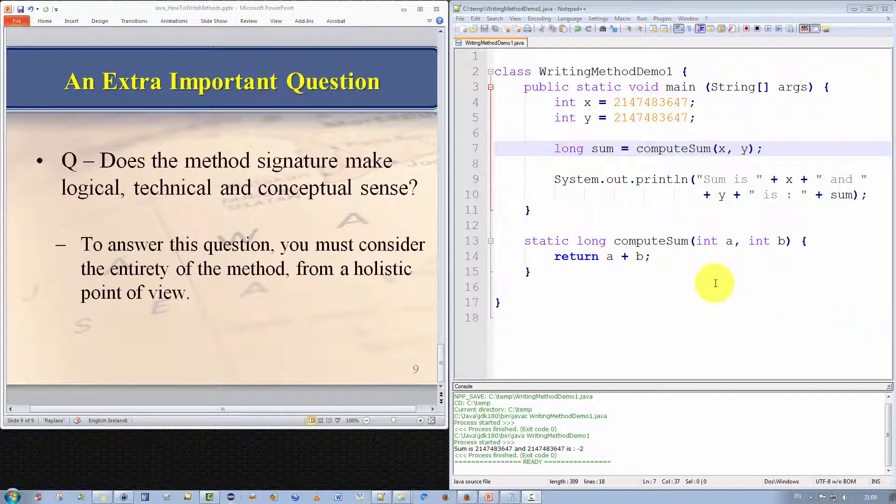So what is causing the problem? The problem is this line here, return a plus b. It's not that Java is doing anything wrong. Java is doing exactly what it's supposed to do. Java has an arithmetic operator here, the addition operator, and it has two integer values. According to the rules of Java, when an arithmetic operation is applied to two variables of the same type, the result is also going to be that type. This arithmetic operator operates on two integers, hence the result of the operation is going to be an integer. But we want it to be a long.